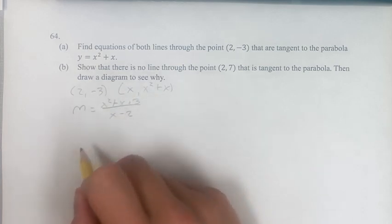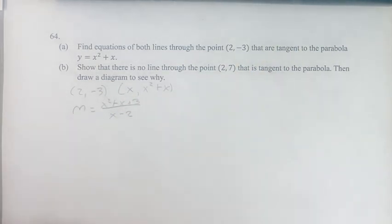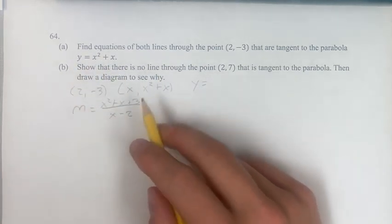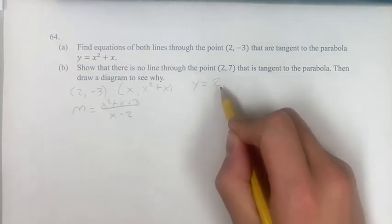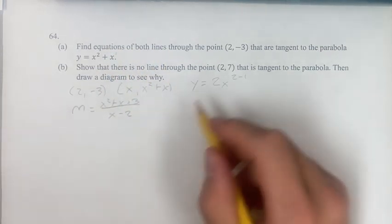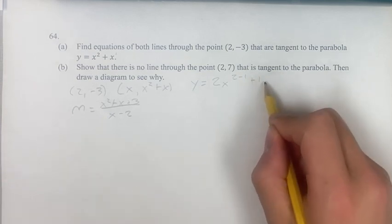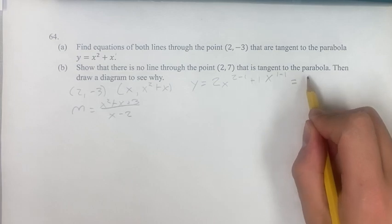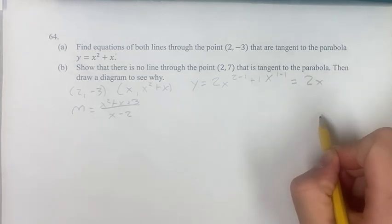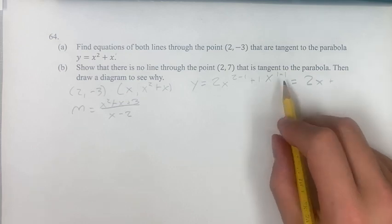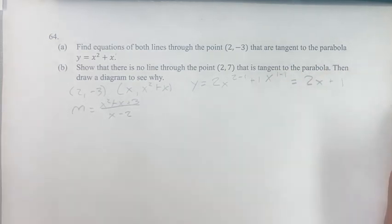We know this is the slope of the tangent line, which is also going to be equal to the derivative. The derivative for this function — we have a power function, so you bring down the exponent, new exponent is the old one minus 1. Same thing with x to the first power: bring down the exponent, old exponent minus 1. So this is equal to 2x plus 1.